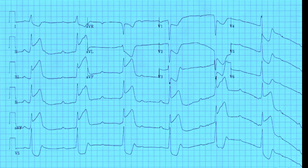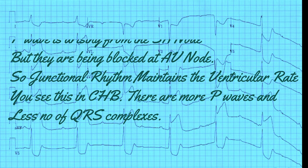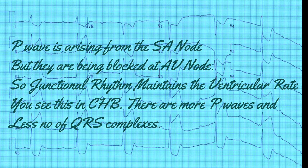Coming back to complete heart block: look at the rate, rhythm, and axis. You must note that the P waves are normal in shape, which means they are coming from the SA node. The P-to-P heart rate is more than the QRS-to-QRS heart rate — there are more P waves and fewer QRS complexes. This is a typical finding in complete heart block. You calculate the heart rate for the atrium and the ventricle separately. The classical description is the P waves dancing through the QRS complexes.